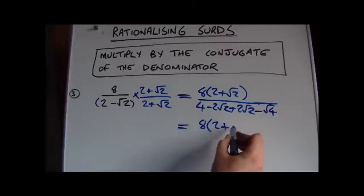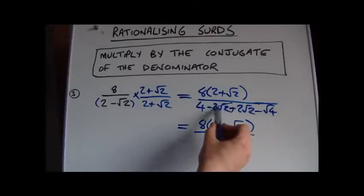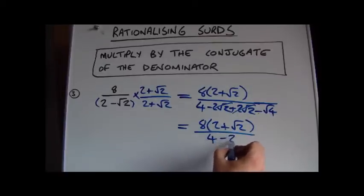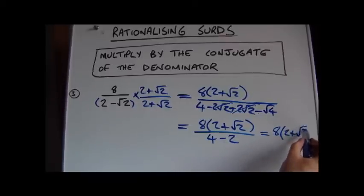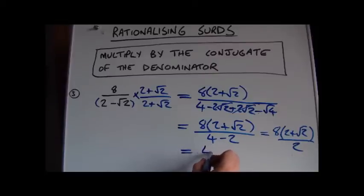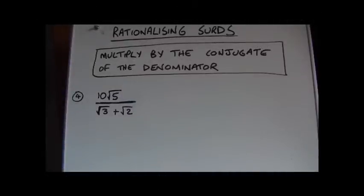Now we simplify. On the top it's still 8 times (2 plus root 2). On the bottom, the minus 2 root 2 and plus 2 root 2 cancel out, leaving 4 minus root 4. Root 4 is 2, so the bottom is 4 minus 2, which equals 2. We now have 8 divided by 2, which is 4, so the final answer is 4(2 plus root 2) — rationalized.